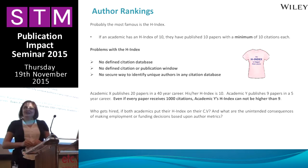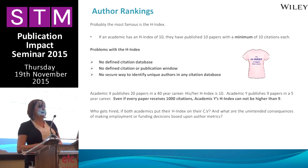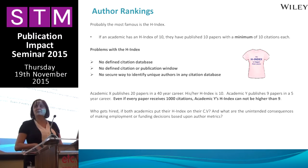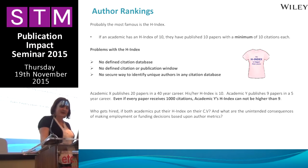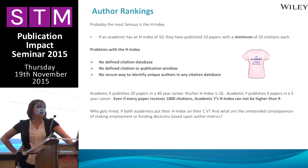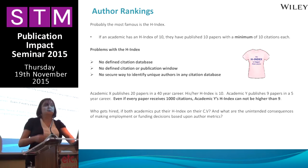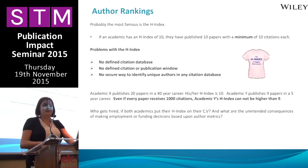Consider how fair this metric really is: Academic X publishes 20 papers in a 40-year career — their H-index is 10. Academic Y publishes 9 papers in a 5-year career; even if every single paper receives 1,000 citations, their H-index can't be higher than 9. And yet lots of academics still put their H-index on their CV to be used in hiring decisions and funding decisions. It would be slightly annoying to put your H-index calculated in Web of Science, only for someone else to get the job because they calculated theirs in Google Scholar and didn't specify the source.